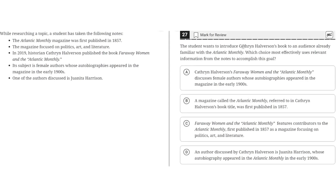The student wants to introduce Catherine Haverson's book to an audience already familiar with The Atlantic Monthly. Which choice most effectively uses relevant information from the notes to accomplish his goal? While researching a topic, a student has taken the following notes. The Atlantic Monthly magazine was first published in 1857. The magazine focused on politics, art, and literature. In 2019, historian Catherine Haverson published the book Far Away Woman and The Atlantic Monthly. Its subject is female authors whose autobiographies appeared in the magazine in the early 1900s.